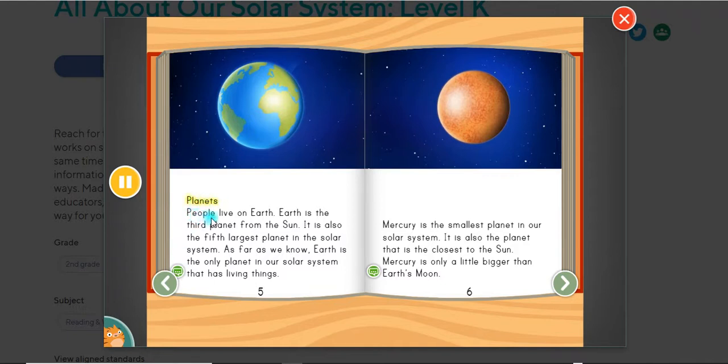Planets. People live on Earth. Earth is the third planet from the Sun. It is also the fifth largest planet in the solar system. As far as we know, Earth is the only planet in our solar system that has living things.